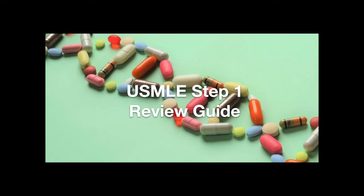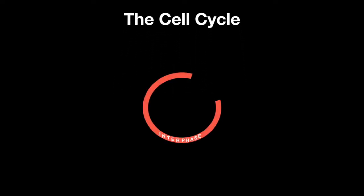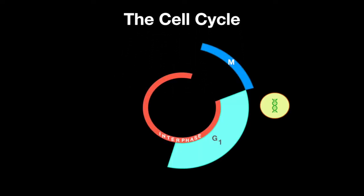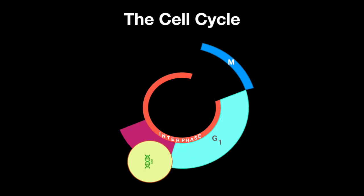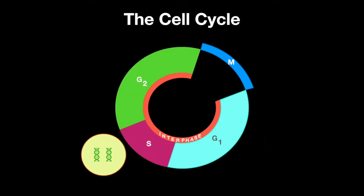Welcome to the Step 1 Review Study Guide. In this lesson, we learn about the cell cycle. The cell cycle is composed of interphase and M phase. Interphase is growth phase 1 (G1), synthesis (S), and growth phase 2 (G2).